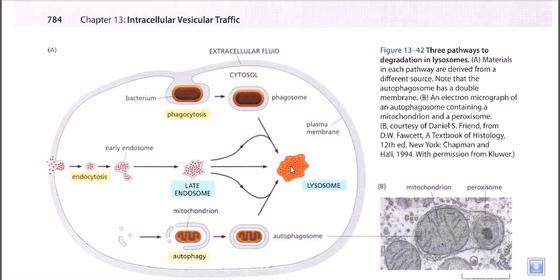Lysosome is an intracellular compartment containing hydrolytic enzymes in a low pH condition. An endosome is also a hydrolytic enzyme-containing compartment, but it is formed due to the invagination of the cell membrane — a pinching-out portion of the cell membrane in an earlier phase. An autophagosome is also a compartment, made by the utilization of small vesicles along with hydrolytic enzymes in a low pH environment.